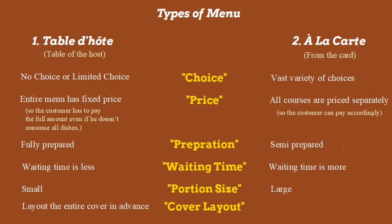Because we know the table d'hôte dishes in advance, we can lay out the cover very neatly in advance with the appropriate silverware. On the other hand, à la carte is an elaborate menu where guests make their own choices from many dishes, so we do not know what the guest will order and cannot lay the full cover in advance. We therefore set only a standard cover for the à la carte situation. These are six major differences between the two menus.